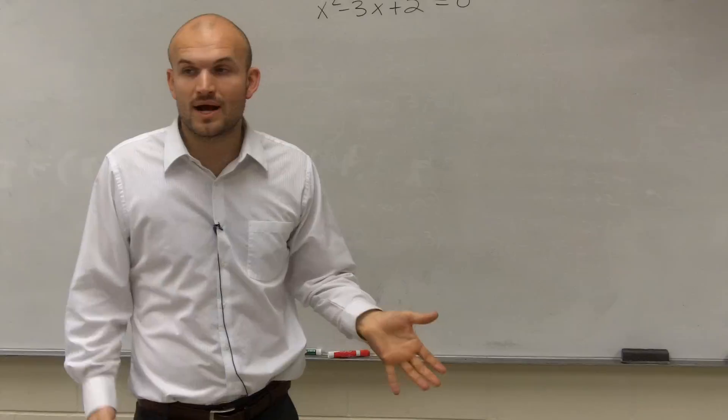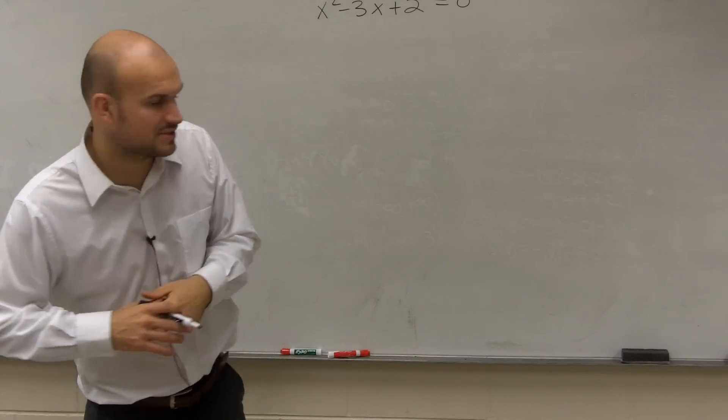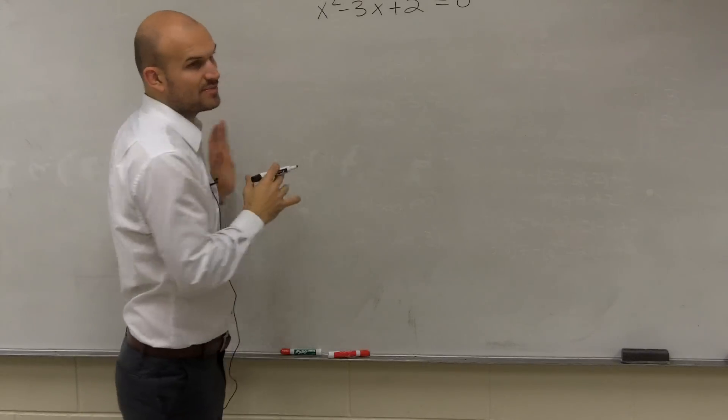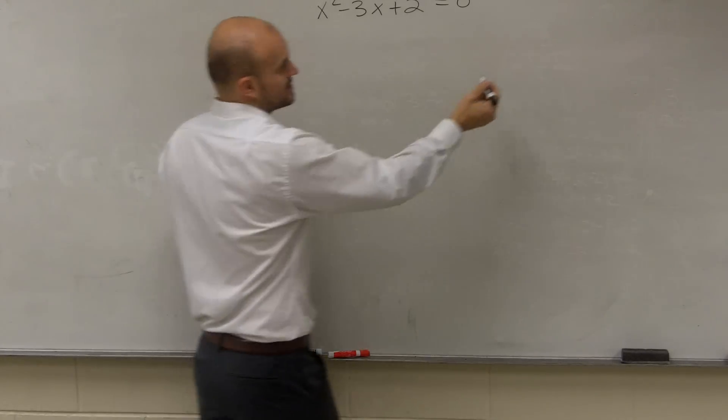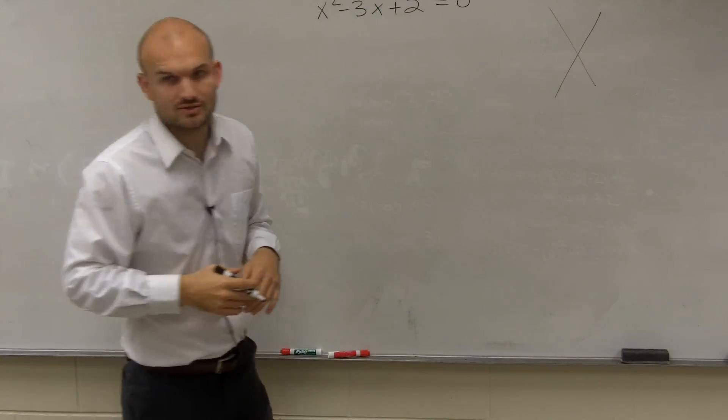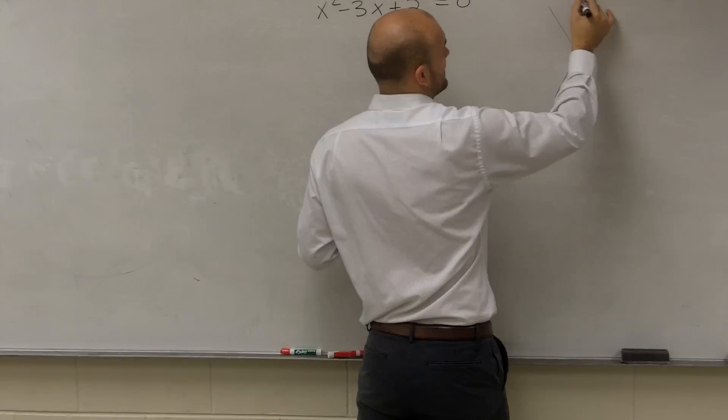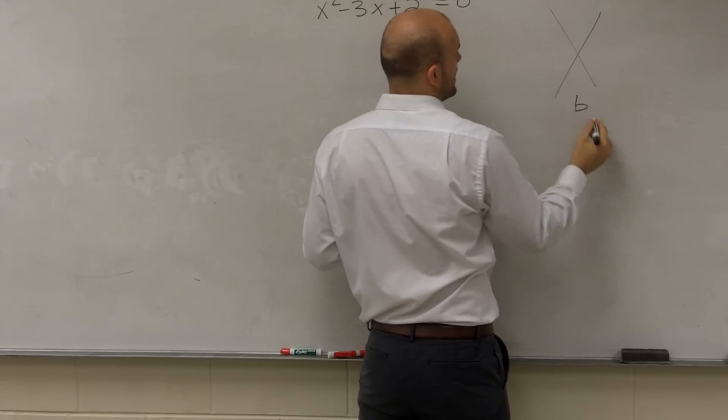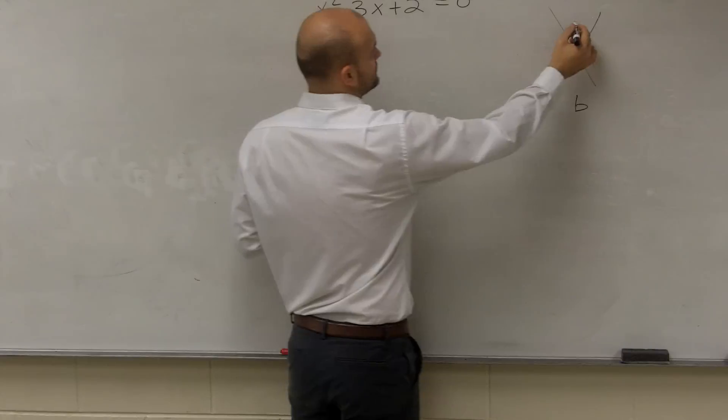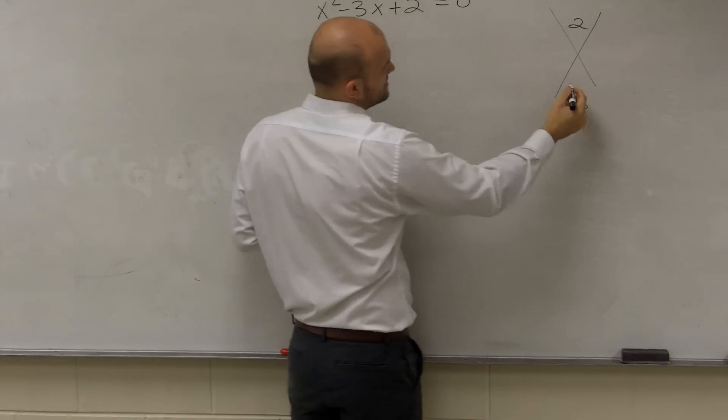So if I can write this as a product, I can use the zero product property, which we talked about. So right now I have x squared minus 3x plus 2. To write this as a product, one way you can do this is I always like to create your little tree diagram where you can have a times c up top and b on the bottom. So a times c in this case is 1 times 2, and then my b is a negative 3.